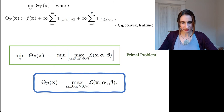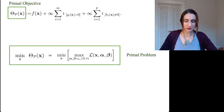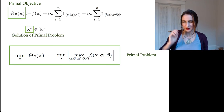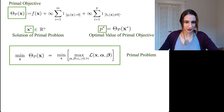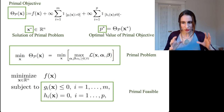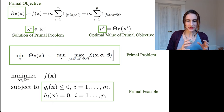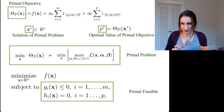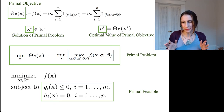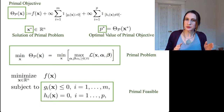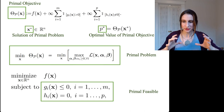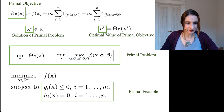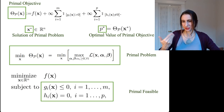A little bit of terminology: the primal objective is called theta_p. The solution of the primal problem is x-star, where star means optimal. And p-star is the optimal value of the primal objective. If the constraints are satisfied, we say that x is primal feasible. Feasible simply means the constraints are satisfied — you can be feasible but not optimal. You don't even have to look at the objective to determine whether something's feasible.